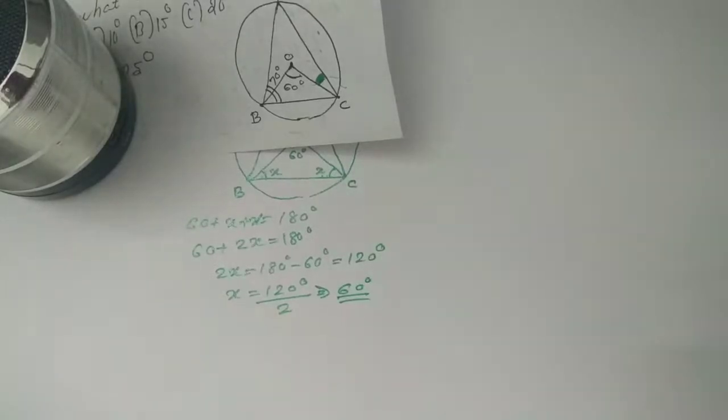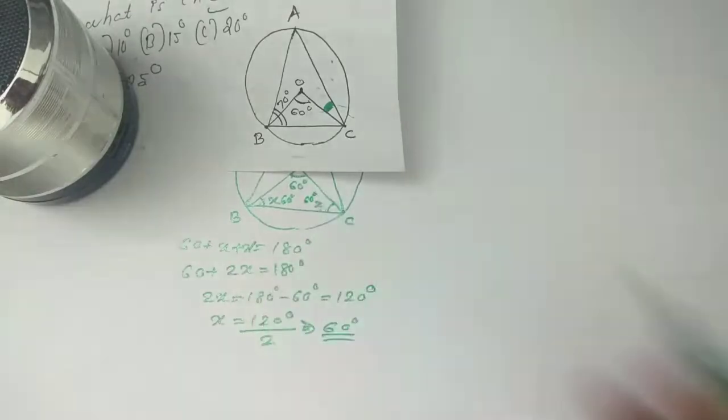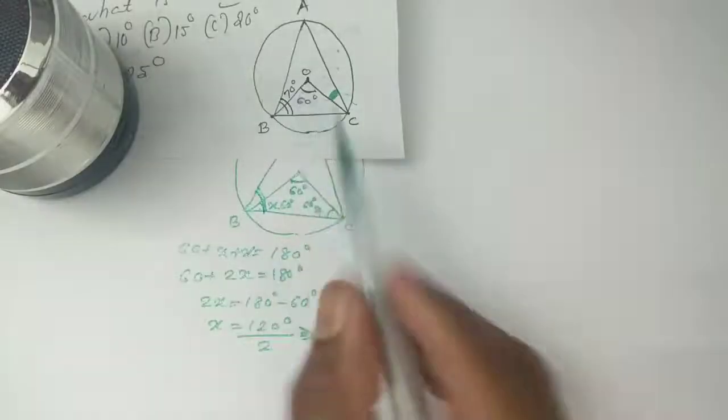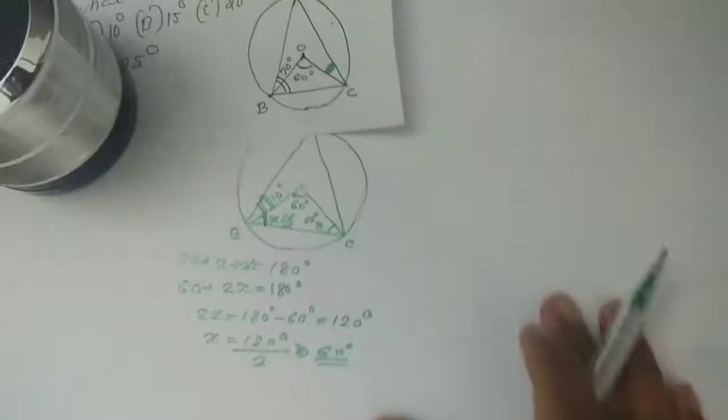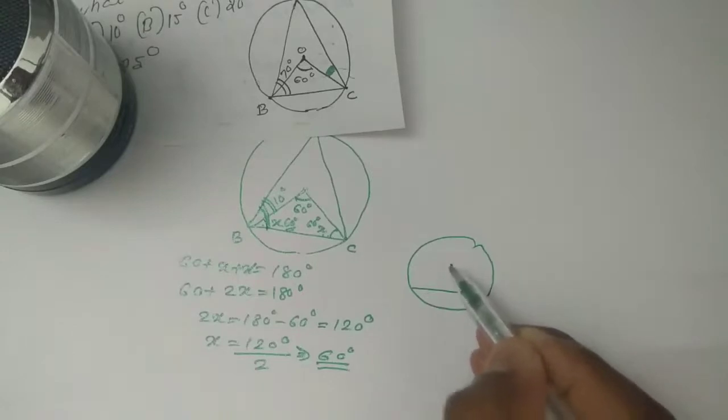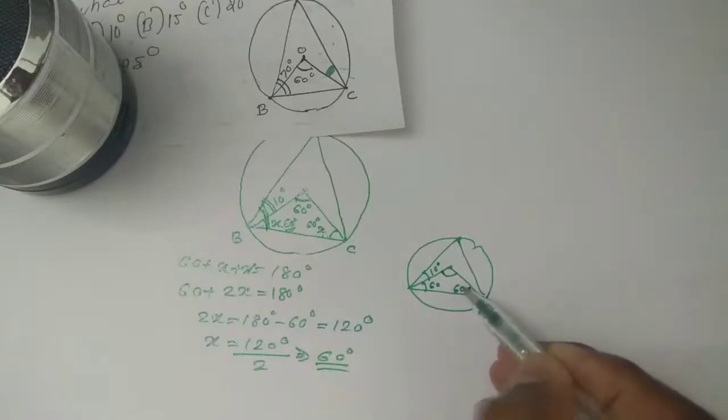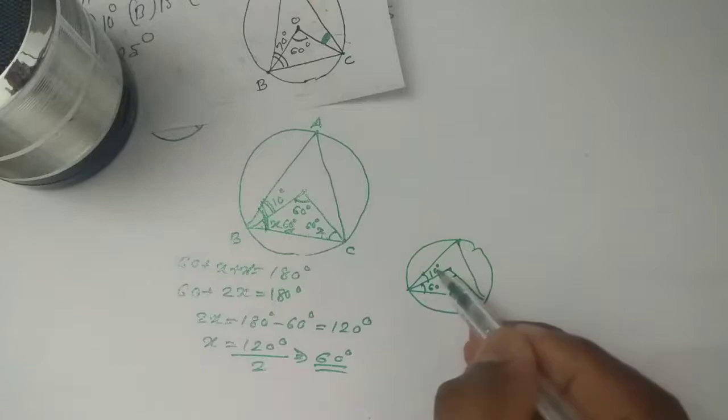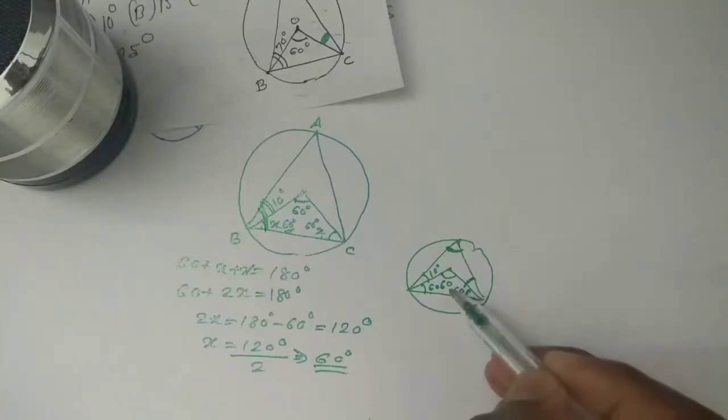So x is 120 degrees divided by 2, which equals 60 degrees. The answer is 60 degrees. This is the value of the question. If we have 8 degrees from this, we will write 10 degrees. If we don't see the average degree, then we write 40 degrees.